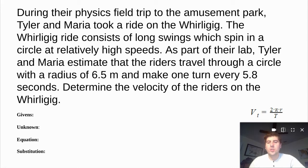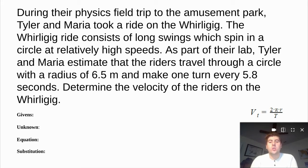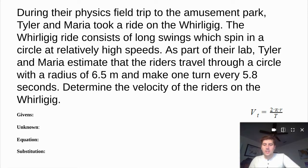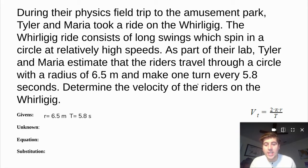Let's look at a problem about tangential velocity. During a physics trip to an amusement park, Tyler and Maria took a ride on the whirligig — long swings which spin in a circle at relatively high speeds. As part of their lab, Tyler and Maria estimate the riders travel through a circle with a radius of 6.5 meters and make one turn every 5.8 seconds. Determine the velocity of the riders on the whirligig. First we need to set up our GUESS method. Our givens: the radius was 6.5 meters and the period, big T, is 5.8 seconds.